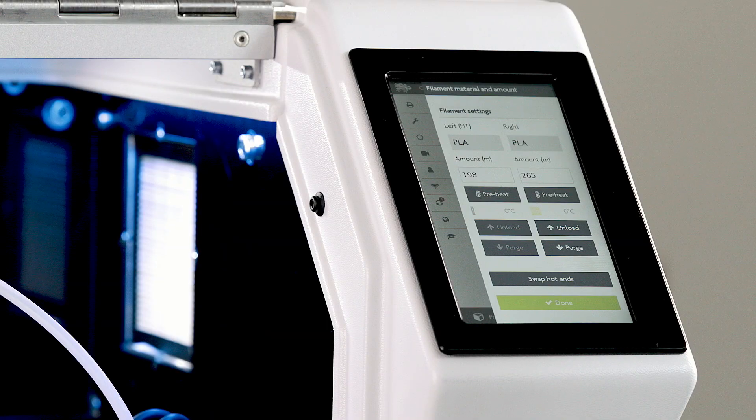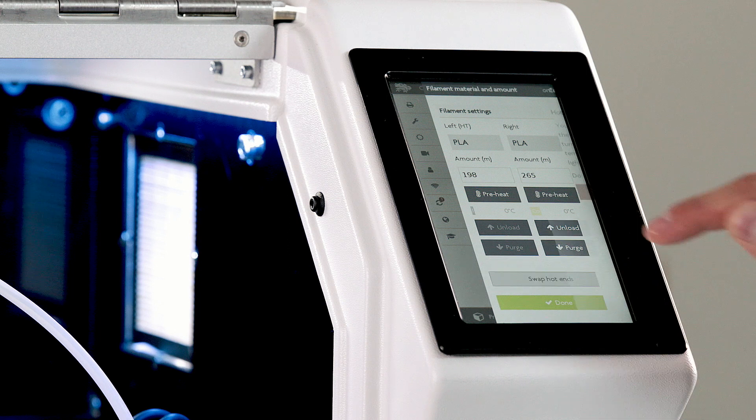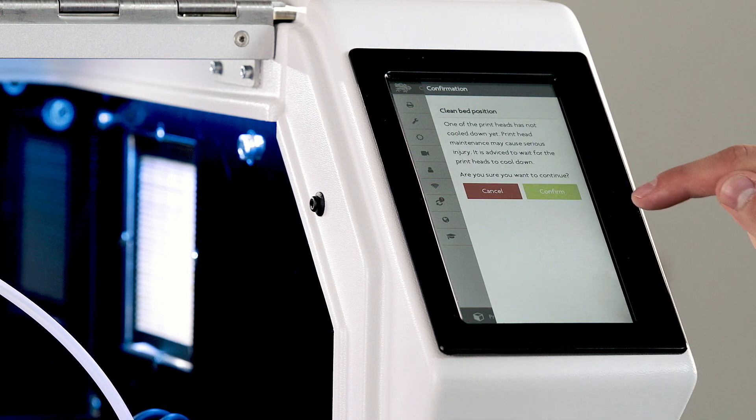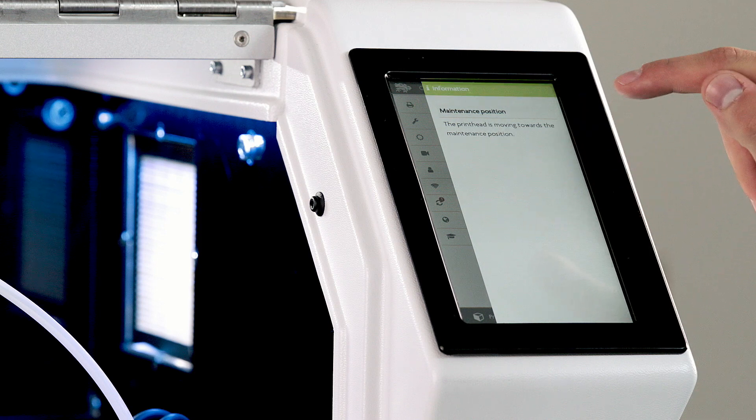Now in head maintenance choose swap hotends. The printer will warn you that it will bring it to the hotend position and the lights will turn off. Confirm.